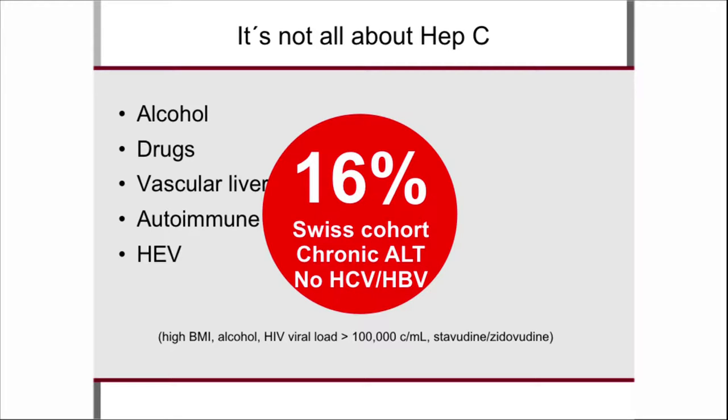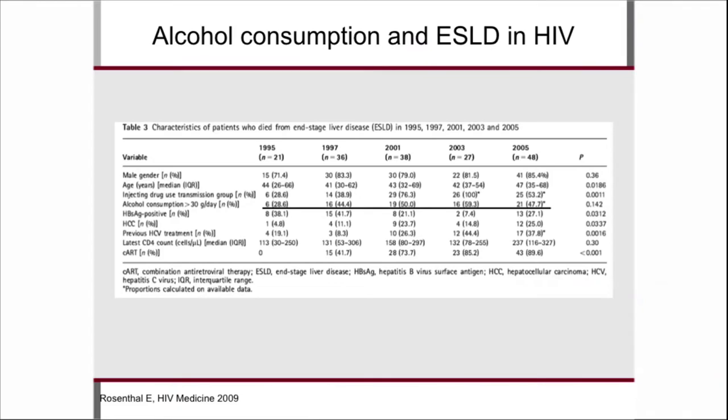Let's talk about alcohol first, because we always say alcohol is an issue and then don't go further into detail. Alcohol is a big problem affecting many patients, and again from the French Mortalité study, when they looked at patients who died from end-stage liver disease, the amount of patients with important alcohol consumption is fairly elevated. These were perhaps patients who had liver disease and were additionally drinking, making the liver disease more severe — this is why we have to talk to our patients about it.